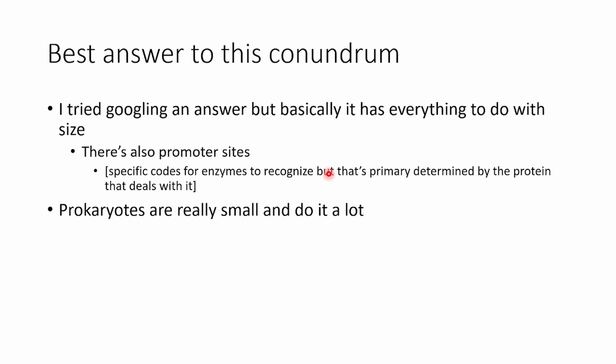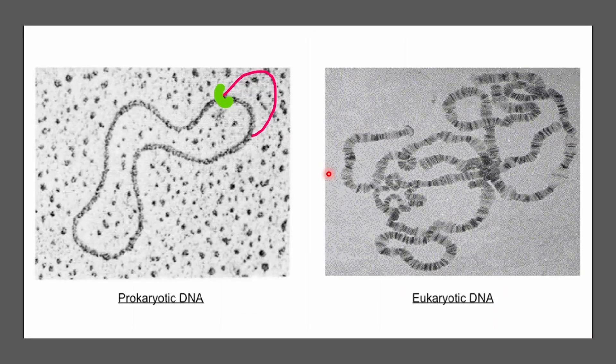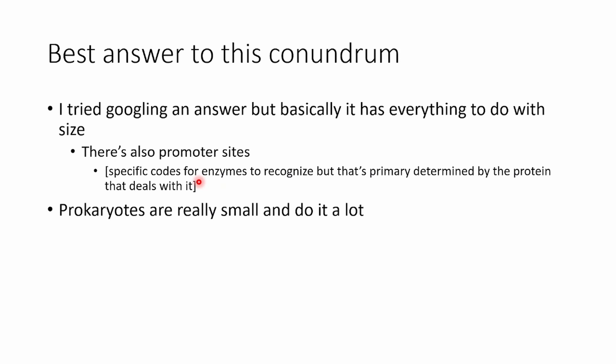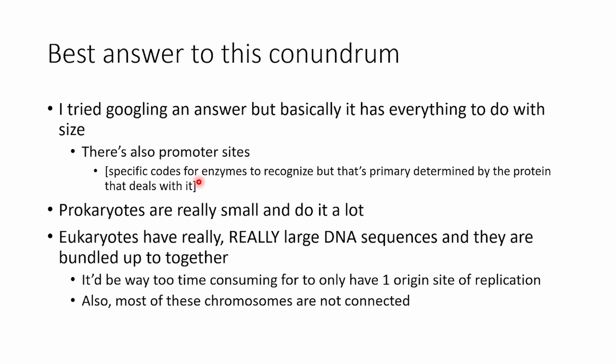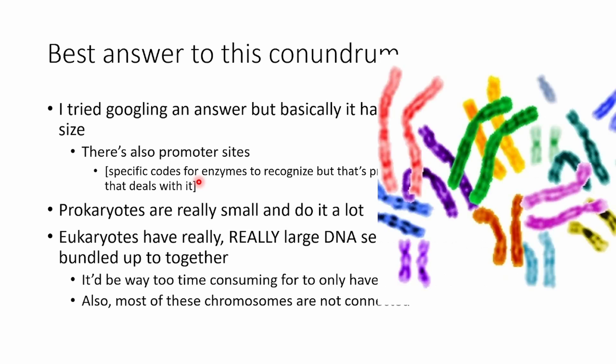For prokaryotes, their size is really small — you can see here, very tiny. We can almost see the DNA itself. But eukaryotes are a different ballpark. They have really large DNA sequences, all bundled up together. When I said sweater, I was not kidding — you're basically making an infinite scarf. And basically, if you have only one origin site or one replication site, it's going to take forever. Also, most of these chromosomes are not connected — they're just a bunch of lines just hanging out.